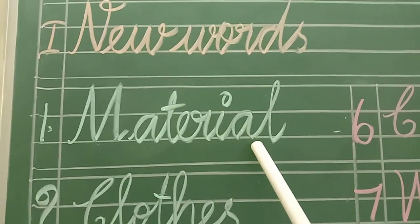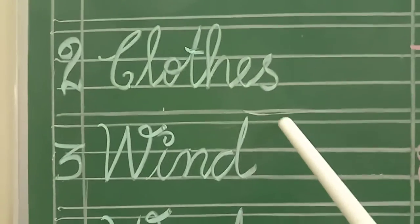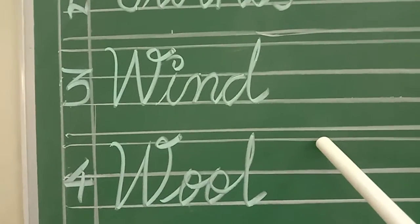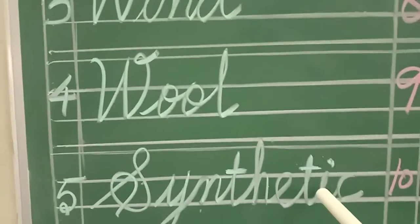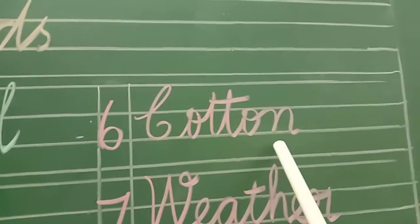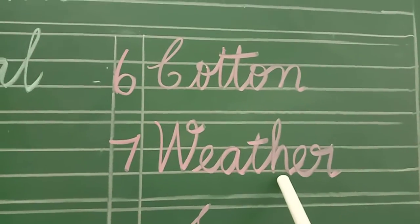Let's see new words and its Tamil meaning. Material - Porul. Clothes - Aadagal. Wind - Kartru. Wool - Kambali. Synthetic - Sairkai Thuny Vakai. Cotton - Parthi. Weather - Vanilai.